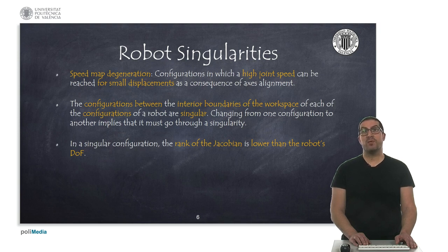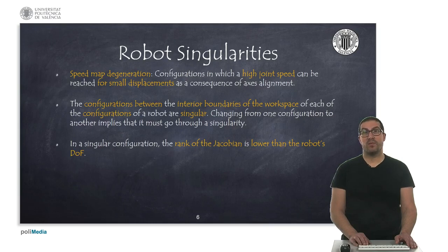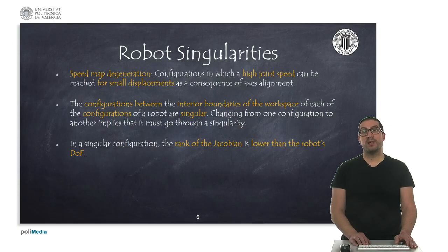In these configurations, the rank of the robot Jacobian is less than the number of degrees of freedom, which implies that the Jacobian will be poorly conditioned for its inversion and, therefore, that is the cause for the speed-map degeneration.